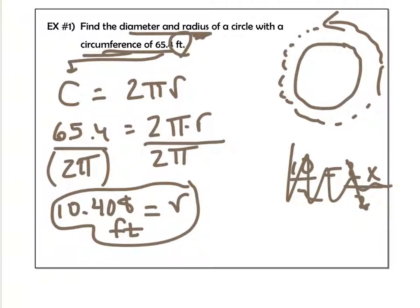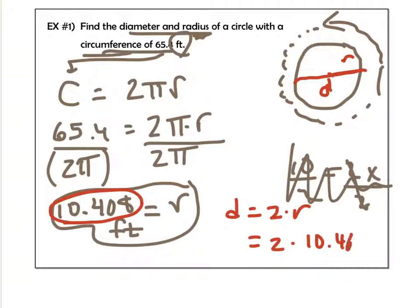So what about the diameter now? Well, if the radius is from the center to the edge, that's the radius, the diameter is the whole thing. So all I really need to do to this number here is to double it. So the diameter equals 2 times whatever the radius is. In this case, it's 2 times 10.408. All right, so I'm going to do that on my calculator, and I get 20.817. And once again, that is in feet.